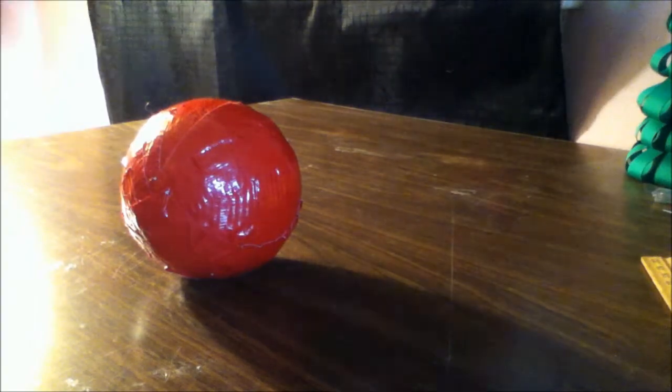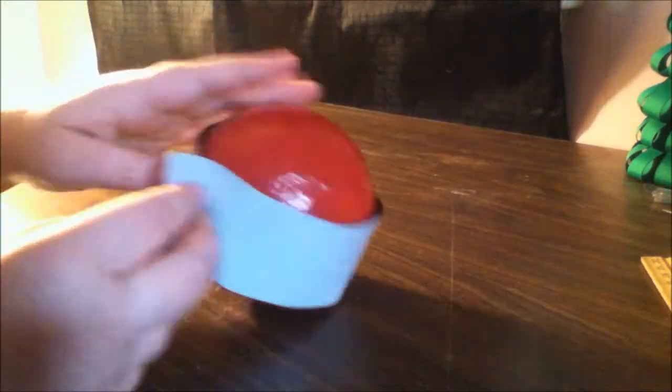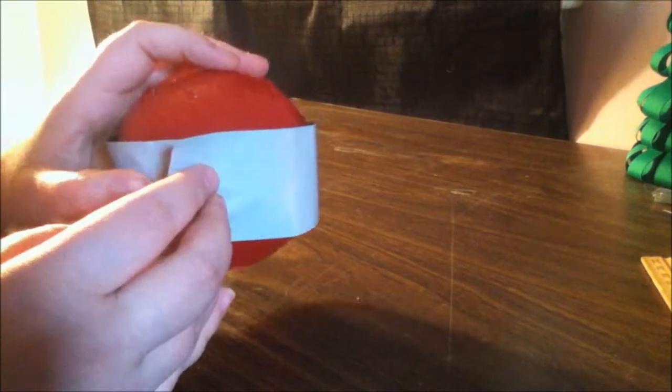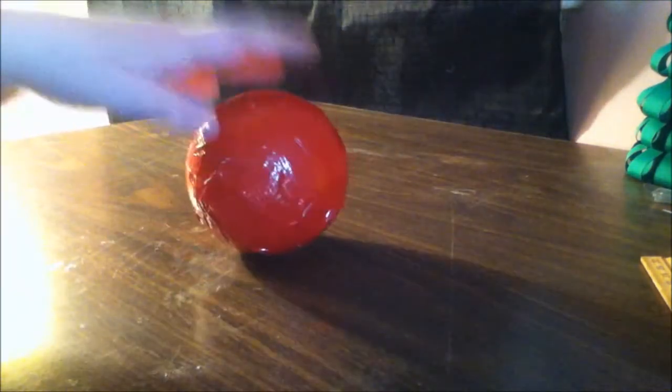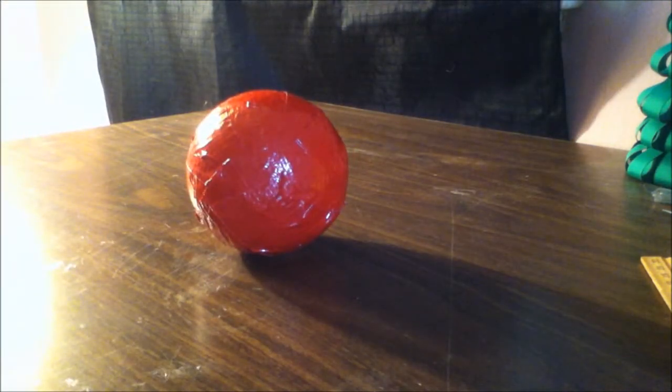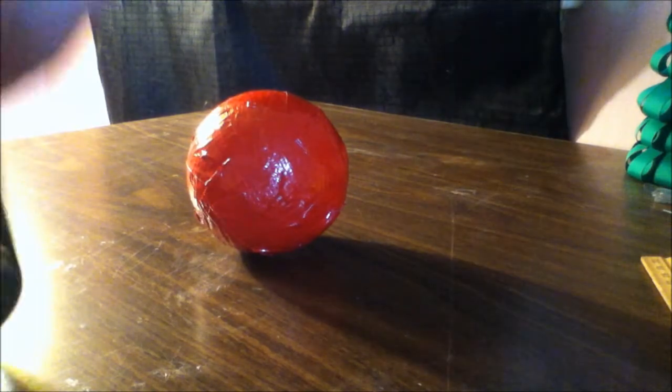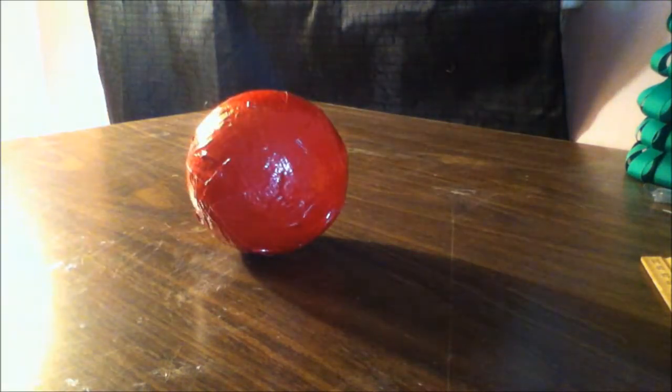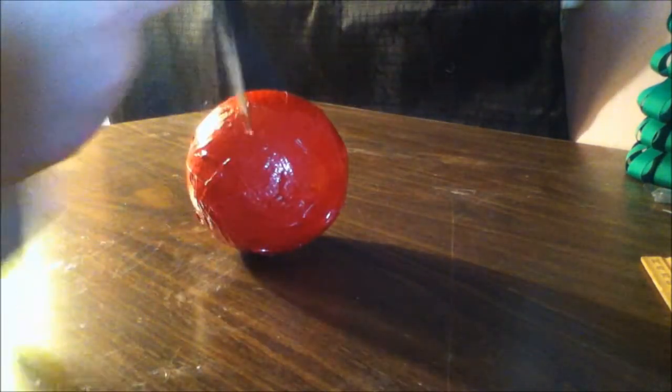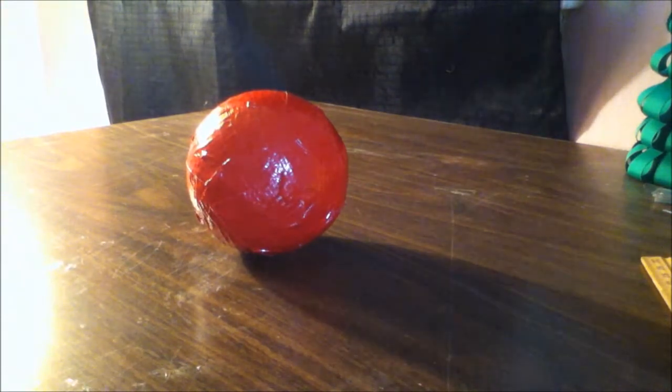So now you want to take a piece of black duct tape that goes around the ball and you just want to rip or cut it in half. Just so it's not such a wide piece.